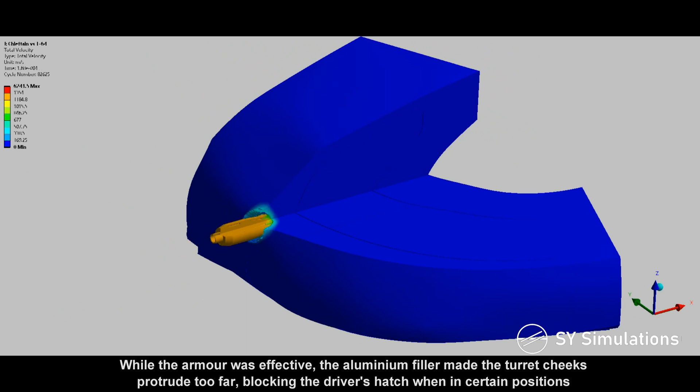While the armor was effective, the aluminum filler made the turret cheeks protrude too far, blocking the driver's hatch when in certain positions.